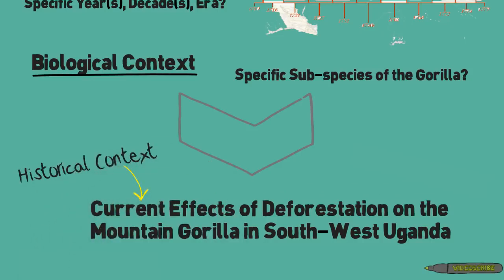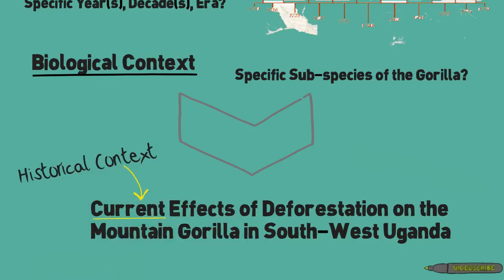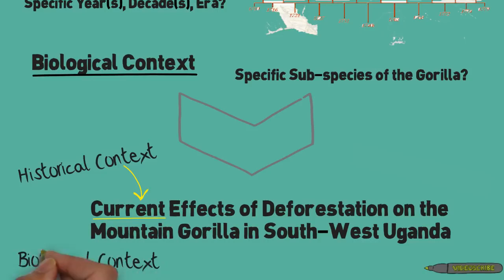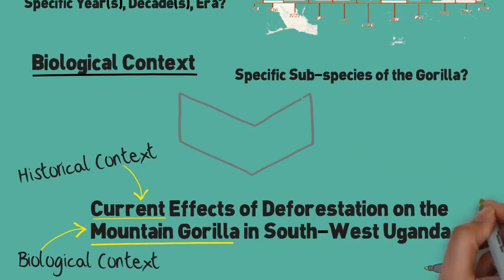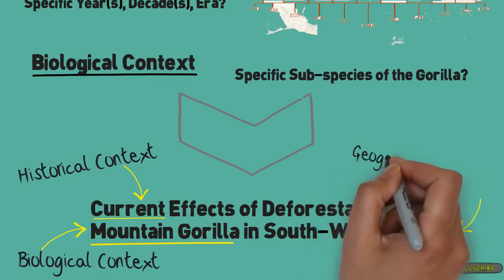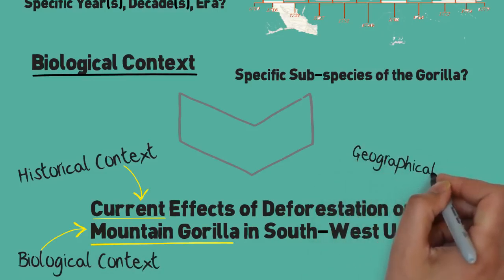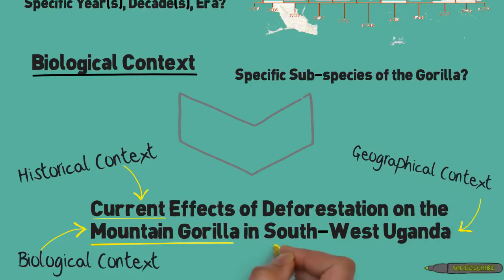So when we combine all three contexts and incorporate them into the original topic, we get something like: 'Current effects of deforestation on the mountain gorilla in southwest Uganda.' We thereby incorporate the historical context, the biological context, and the geographical context. Adding context truly is a great way of narrowing your topic.